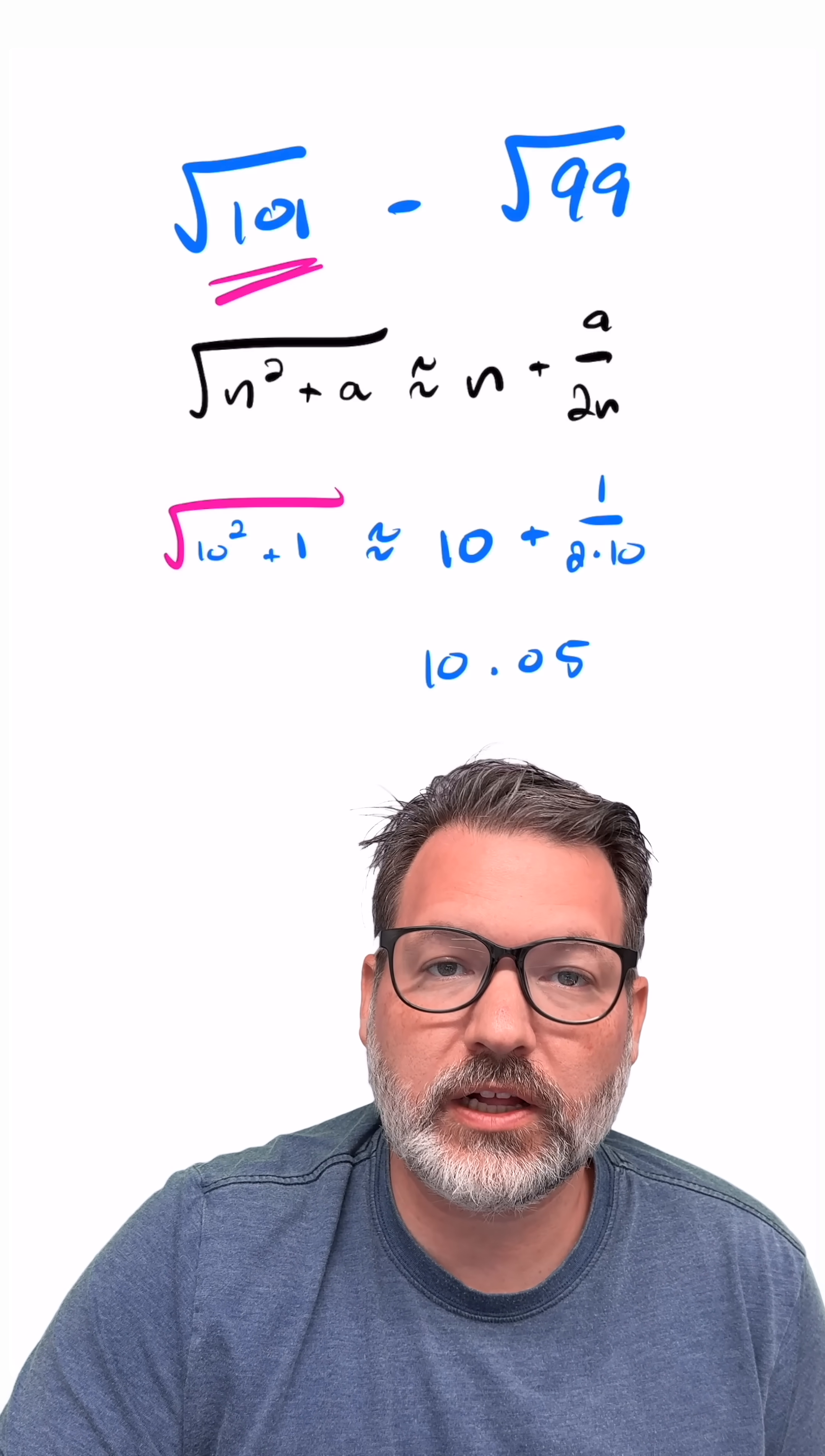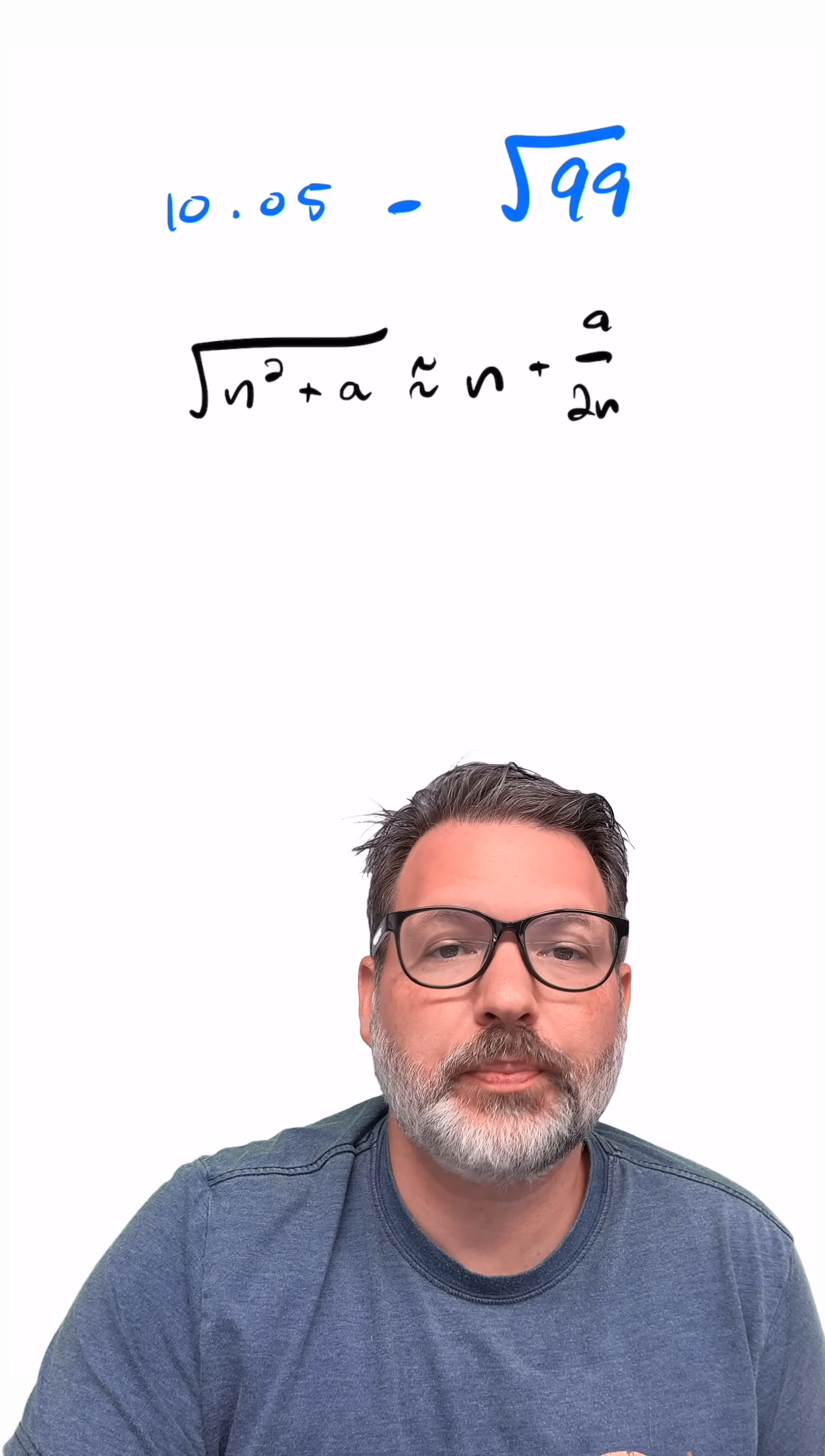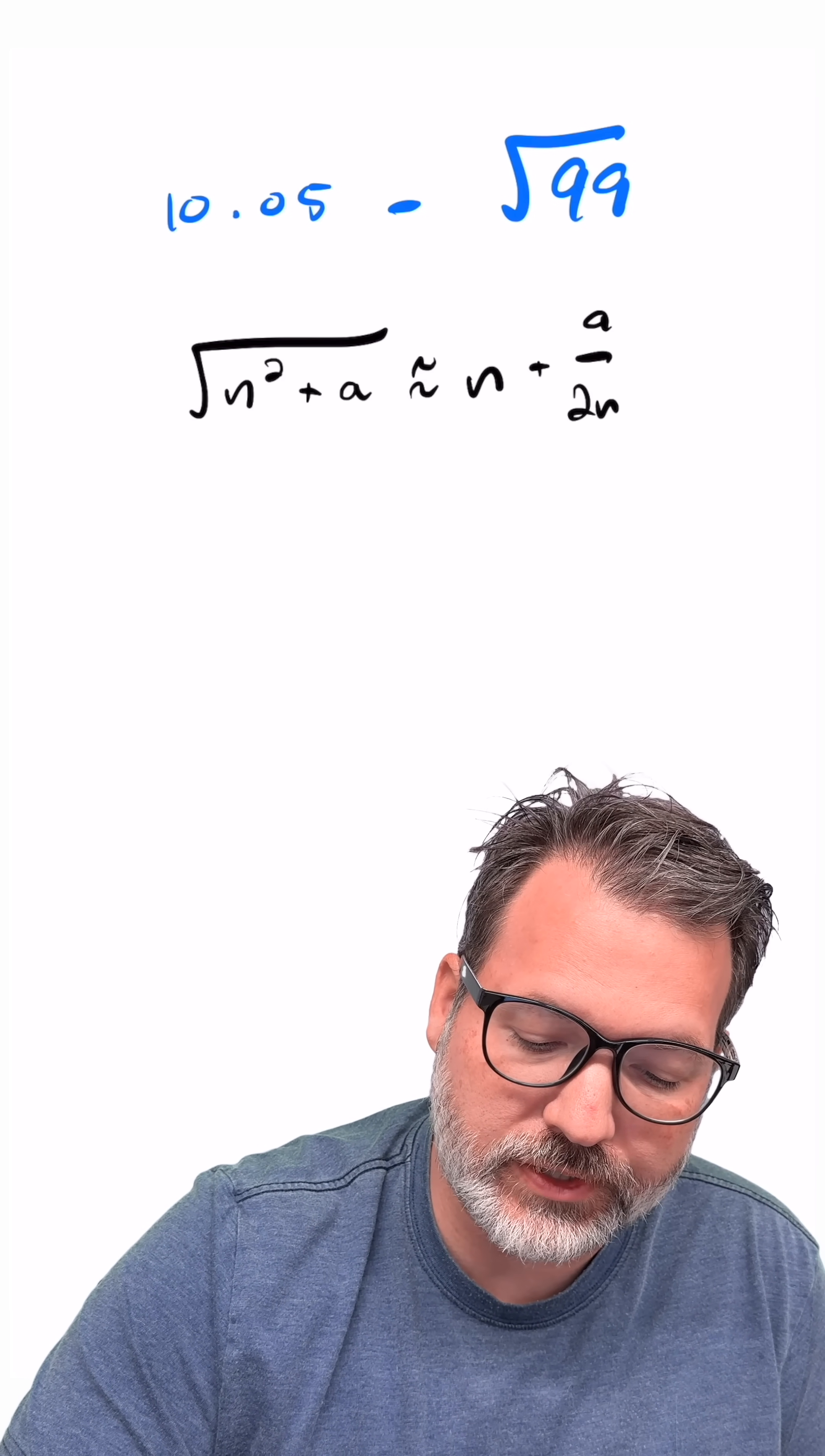which is indeed very, very close to the square root of 101. For 99, we can adjust it this way. It doesn't even matter that a is positive. a just needs to be small compared to n squared. But whether it's positive or negative makes no difference to us.